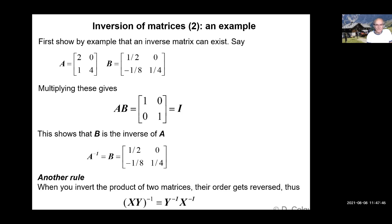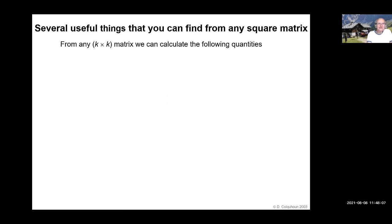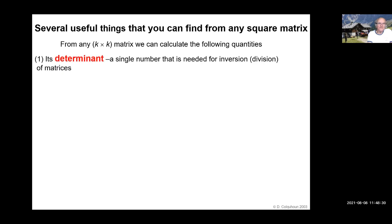Another useful rule is that if you invert the product of two matrices, their order gets reversed — just like when you transpose them. So there are several useful things you can find from any square matrix: you can find its determinant, which is a single number needed for inversion of matrices among other things.